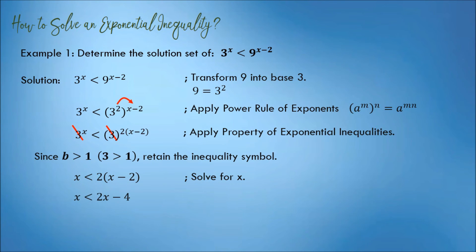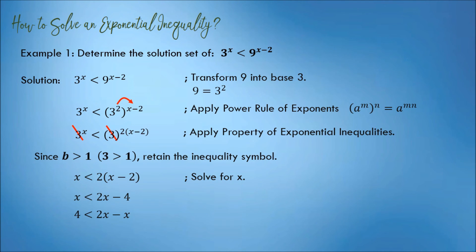Simplify the inequality. It will become x is less than 2x minus 4. Transpose x to the right side so it can be combined with 2x, while transpose negative 4 to the left. The result is 4 is less than 2x minus x. Since 2x minus x is x, therefore x is greater than 4.